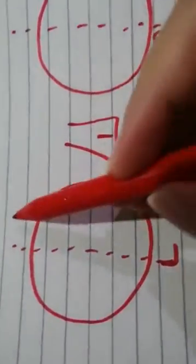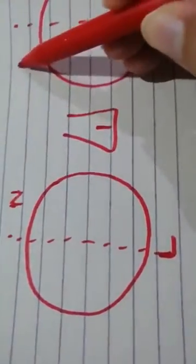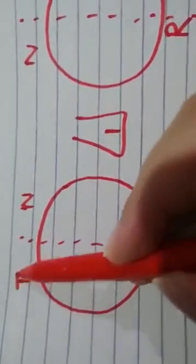This is me representing the retina. This is the nasal half of the retina, this is the nasal half of the retina, this is the temporal half of the retina and this is the temporal half of the retina.